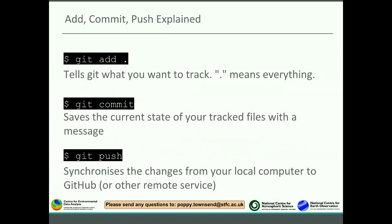Another commonly asked question is: what's the difference between git add, git commit, and git push? Git add tells git what you want it to track — until you've done git add, it's not watching the file. That dot means everything. Git commit is essentially a save — it saves the current state of your tracked files with a message, locally on your computer. And then git push synchronizes the changes from your local computer to GitHub or whatever other remote service you're using.